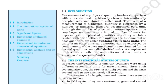Although the number of physical quantities appears to be very large, we need only a limited number of units for expressing all the physical quantities since they are interrelated with one another. The units for the fundamental or base quantities are called fundamental or base units. The units for all other physical quantities can be expressed as combinations of the base units. Such units obtained for derived quantities are called derived units. A complete set of these units, both base units and derived units, is known as the system of units.